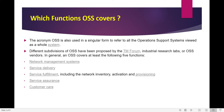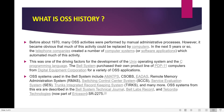The acronym OSS is also used in a singular form to refer to all the operation support systems viewed as a whole system. Different subdivisions of OSS have been proposed by the TM Forum, industrial research labs, or OSS vendors. In general, OSS covers at least the following five functions: network management systems, service delivery, service fulfillment including network inventory activation and provisioning, service assurance, and customer care.